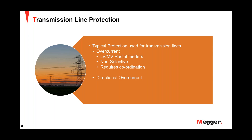For mesh networks, we would use directional overcurrent protection, which is basically overcurrent protection with a polarizing source that makes it directional — supervised by the direction of the current — and has good selectivity.